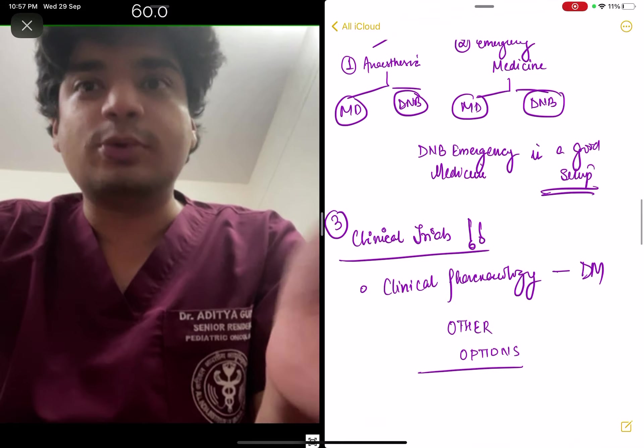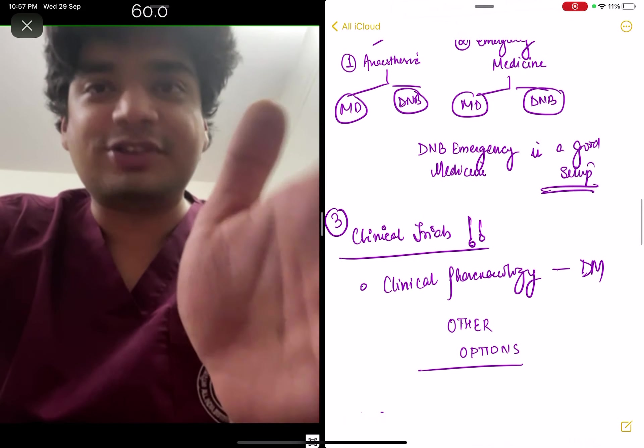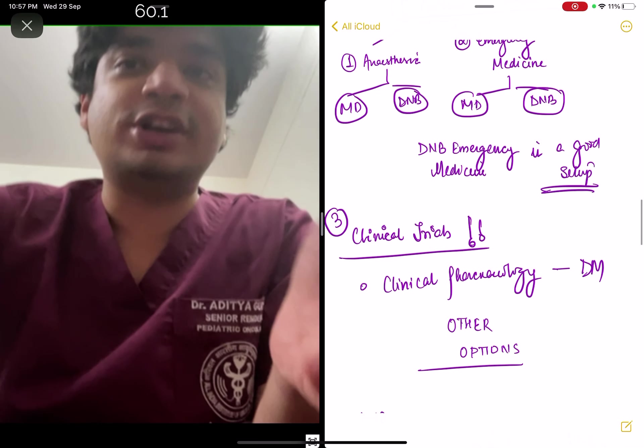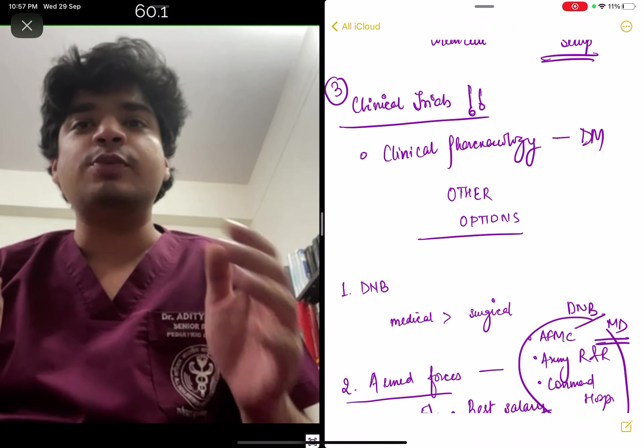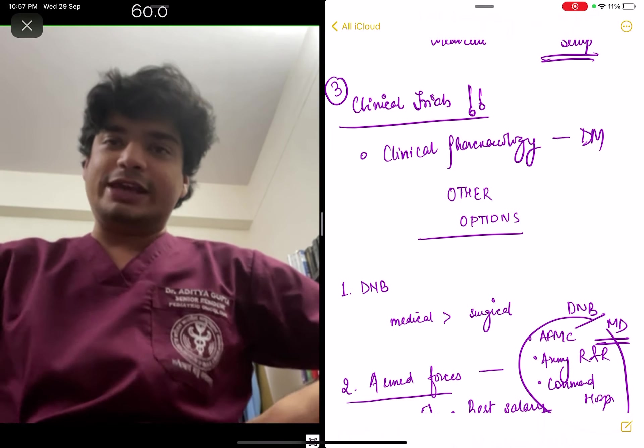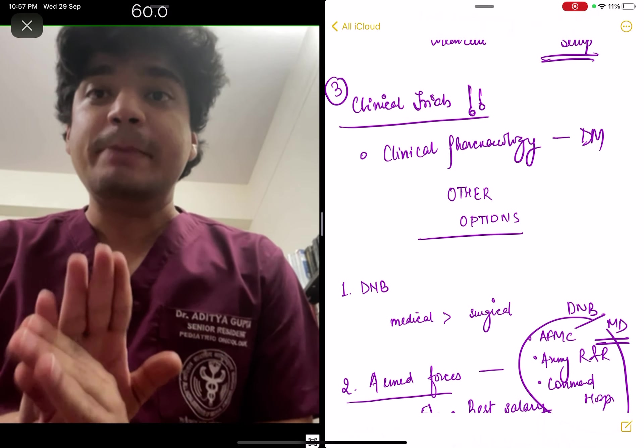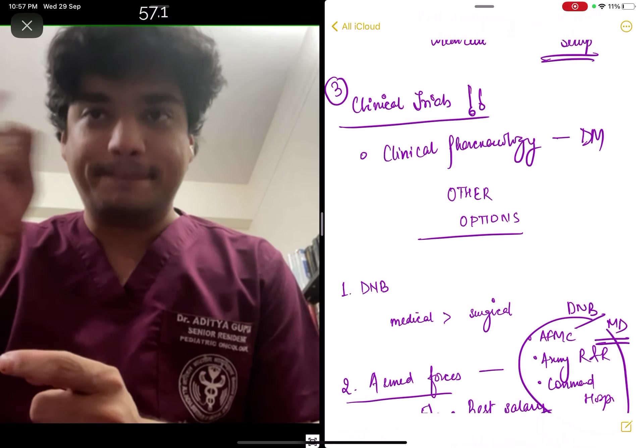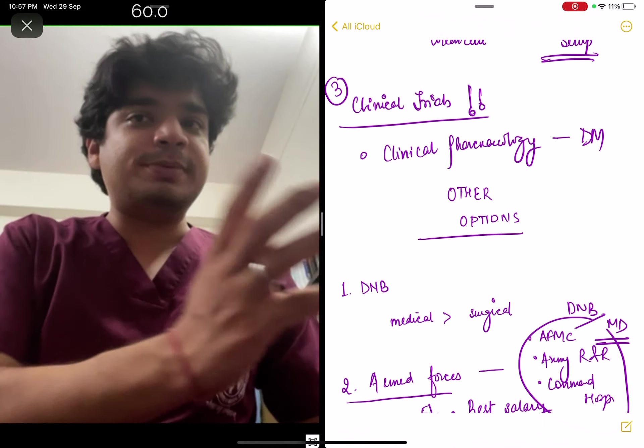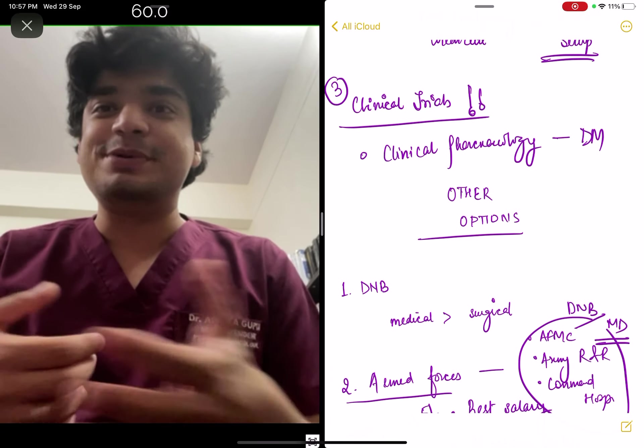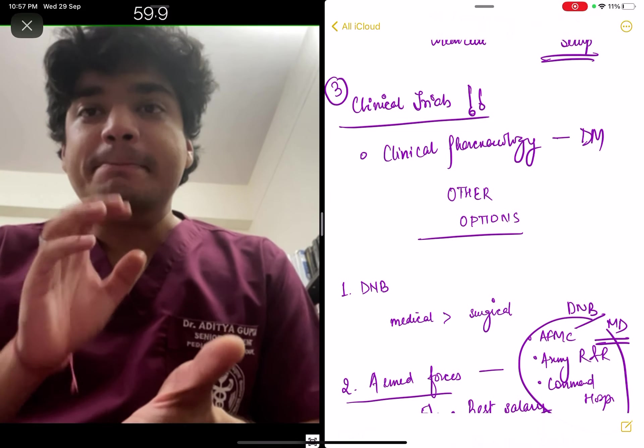You will get a government faculty position relatively much easier compared to someone doing MD in medicine or pediatrics. What are the other options I want you to explore if you're not getting the rank, branch, or college that you dreamed of versus DNB? This is the one thing everyone keeps asking. As far as DNB is concerned, the thing is DNB is mostly in private hospitals.